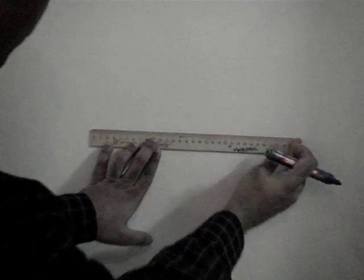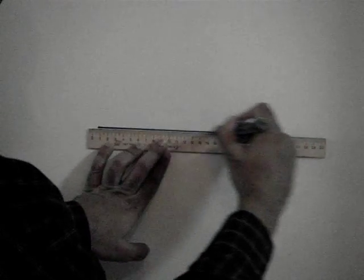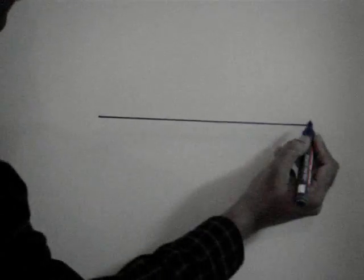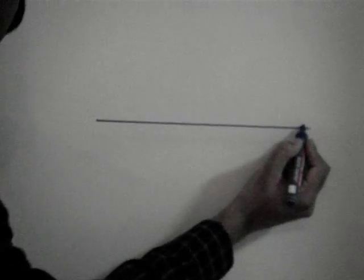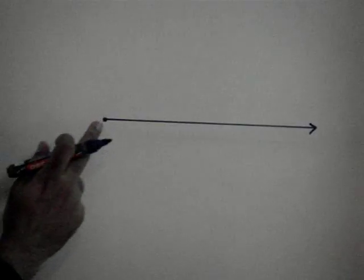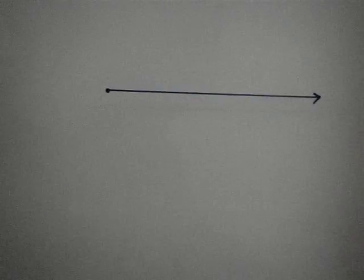So here, first I am going to draw one ray like this with one end point here. Suppose I would like to construct a 60 degree angle at this end point.